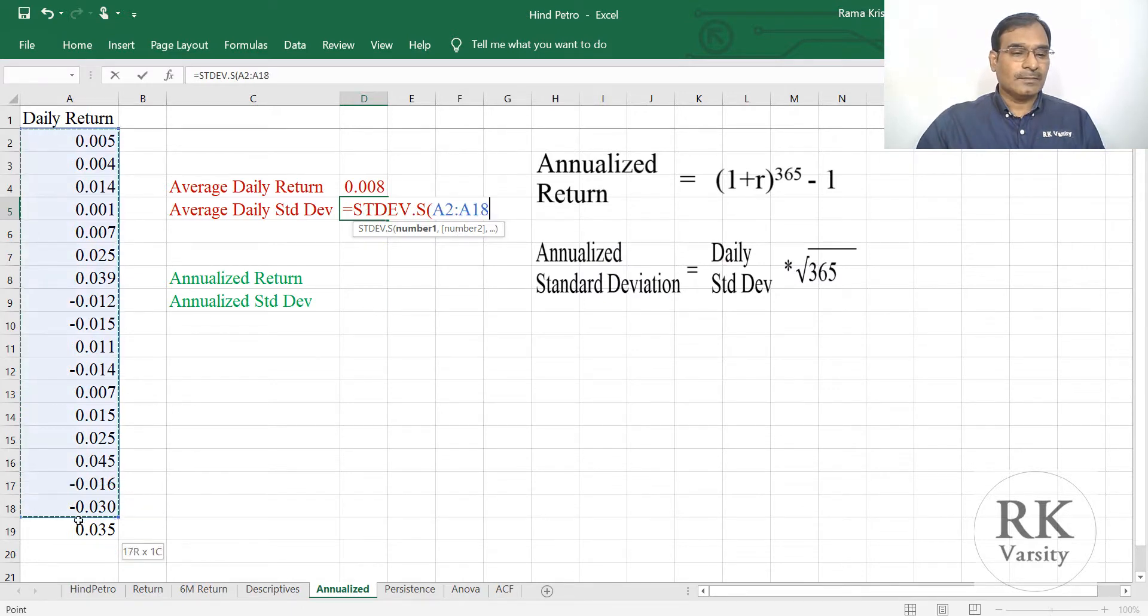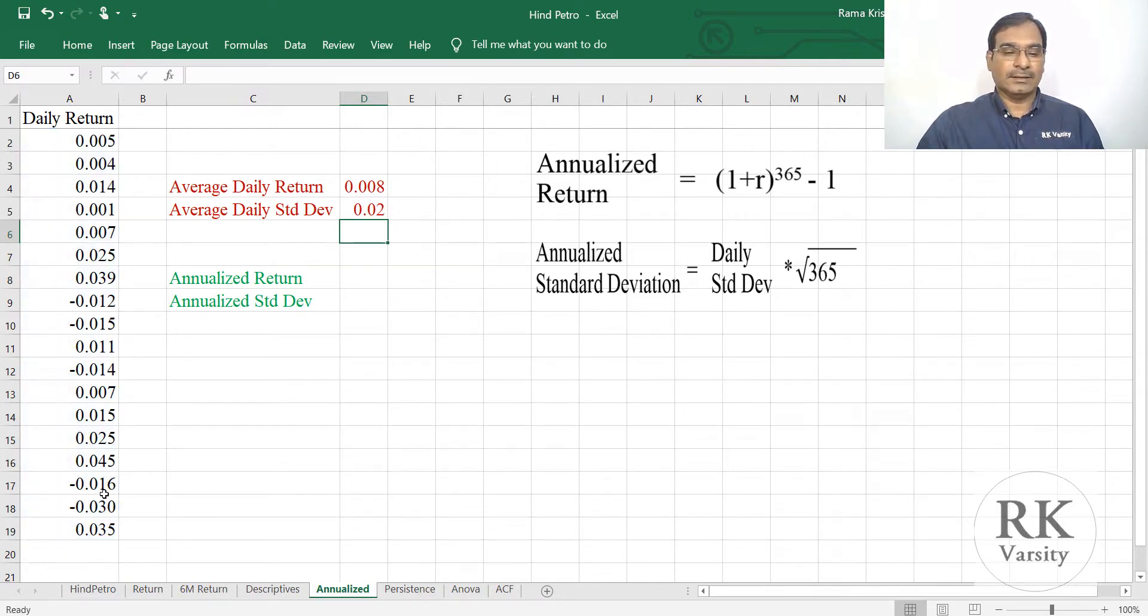Then your daily return series, select the daily return series, close the bracket, press enter key. Now you have an average daily return and average daily standard deviation.